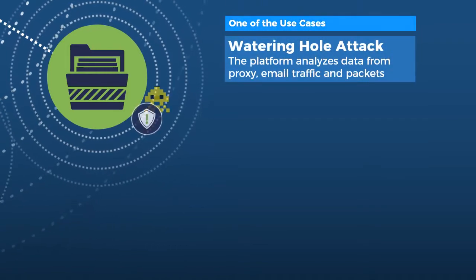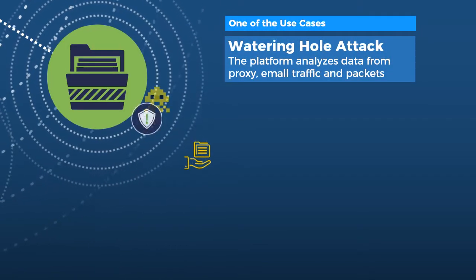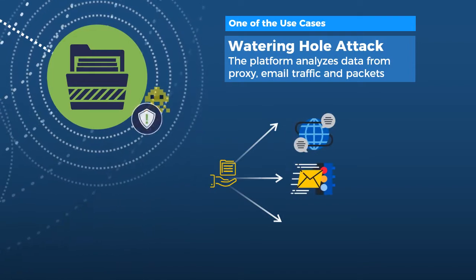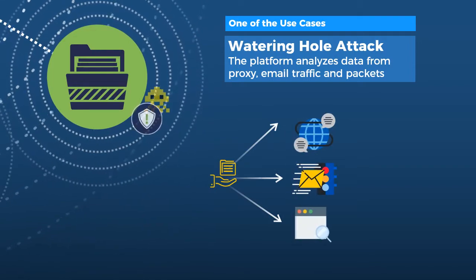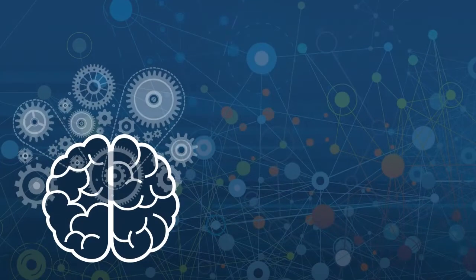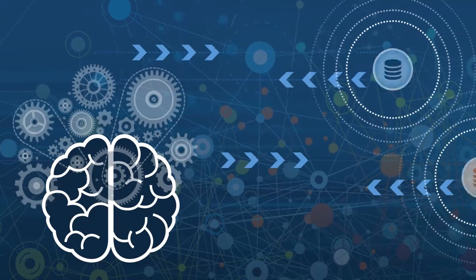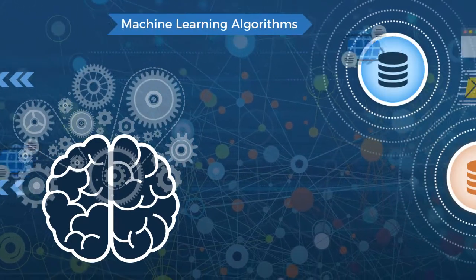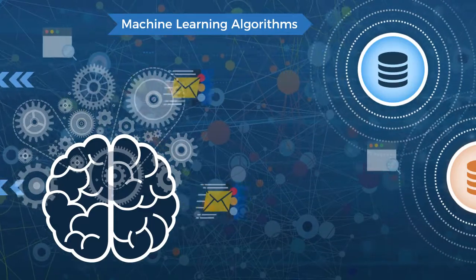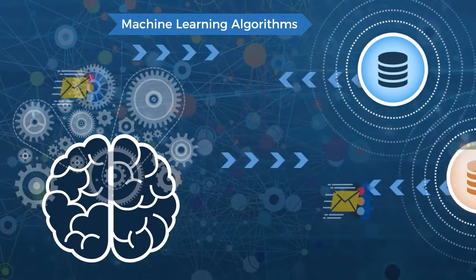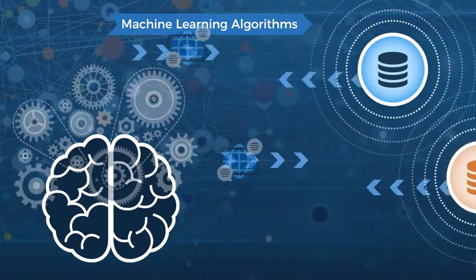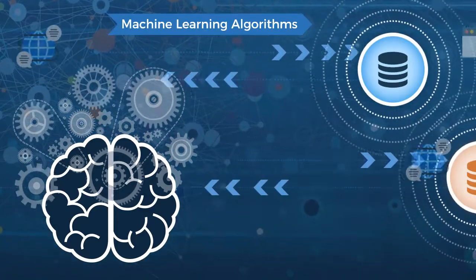For example, detecting watering hole attacks will need simultaneous analysis of data from proxy, email traffic, and packets. RiskView differs from existing big data analytics products in its ability to apply machine learning algorithms in parallel to multiple data sources for the same use case of an attack.